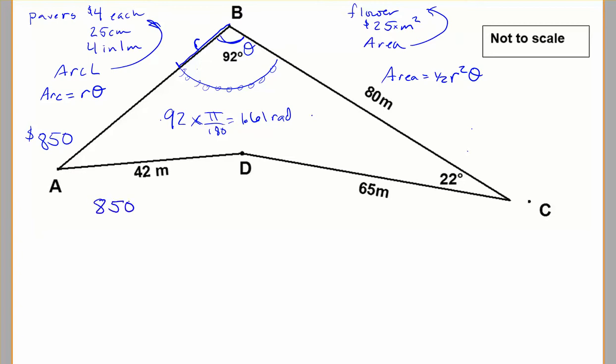So think about it just from words at the start. I'll do words here. I've got my total budget. I've got to use that to cover the cost of the pavers and the cost of the flowers that are planted. So that's $850. It has to cover the cost of my pavers and the cost of my flowers.